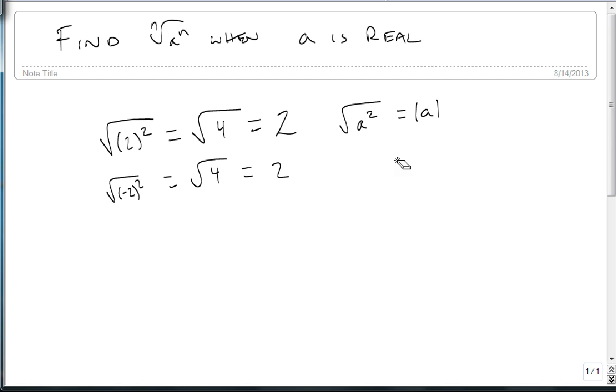This is our rule for square roots. It's also true that the nth root of a^n equals the absolute value of a if and only if n is even.